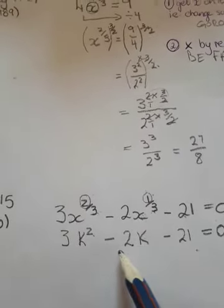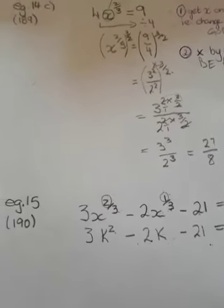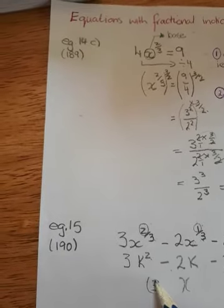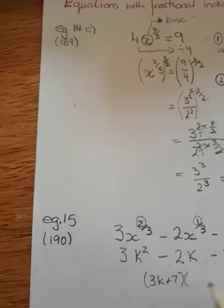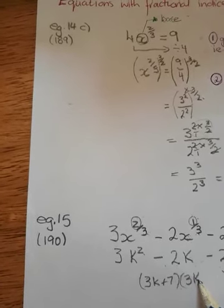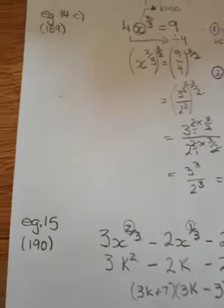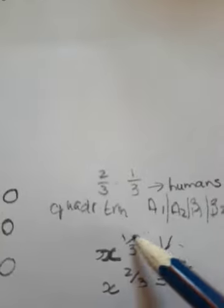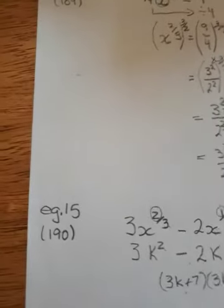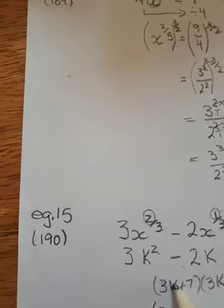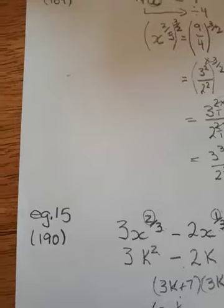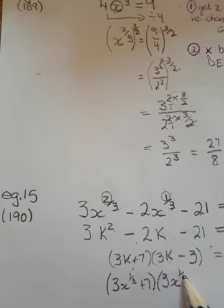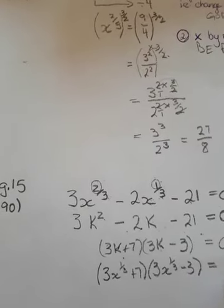We have a negative c and a negative b, so in this case it is a B1 factorization. This becomes (3k + 7)(3k − 3). But now we must go back and reverse this. Since we made k equal to x to the power of 1 third, we must now exchange the k back, writing x to the power of 1 third into our brackets: (3x to the power of 1 third + 7)(x to the power of 1 third − 3) equals 0.